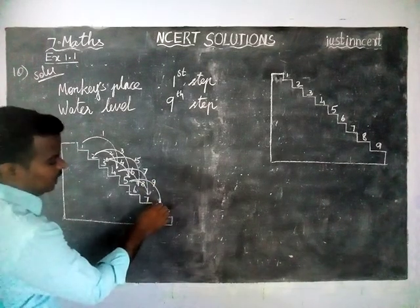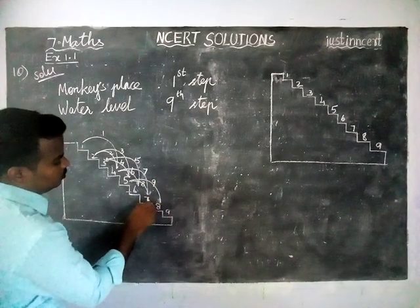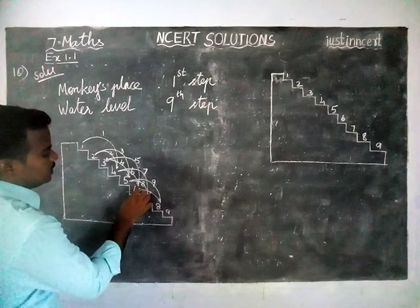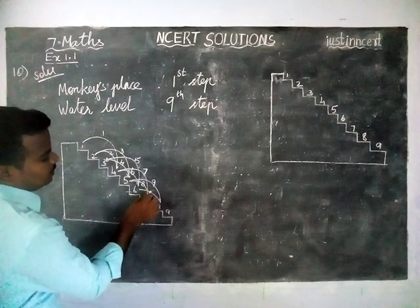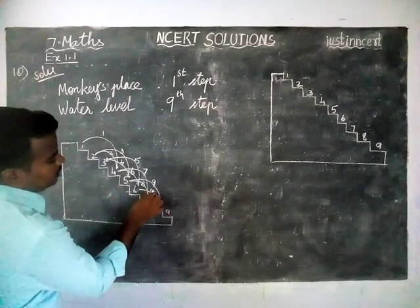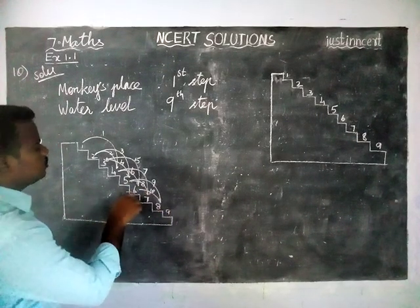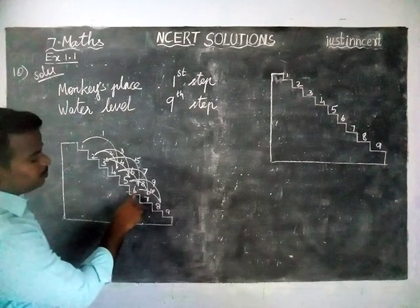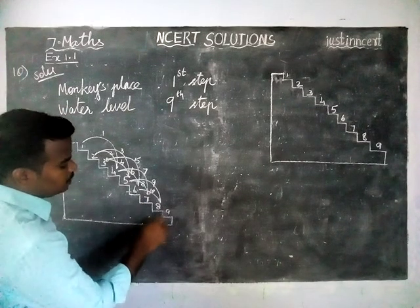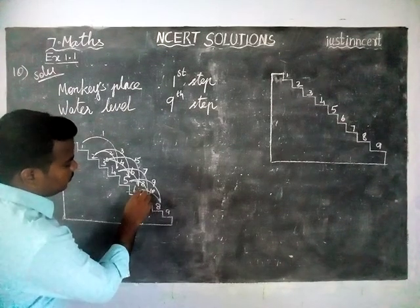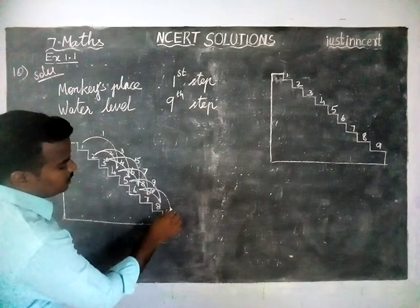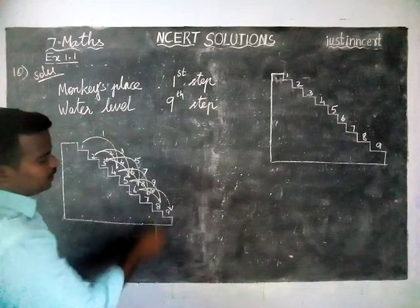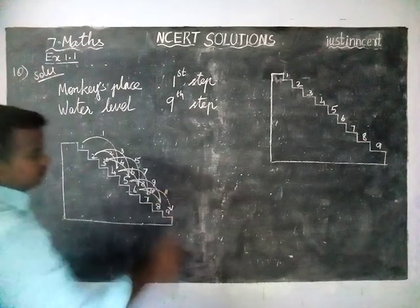Again from five it is jumping three steps, reaching eight — this is the ninth jump. Again from eight, two steps back — one, two — it is reaching six. This is the tenth jump. Again it is going to jump three steps — one, two, three. So now it is reaching the water level. This is the eleventh jump.